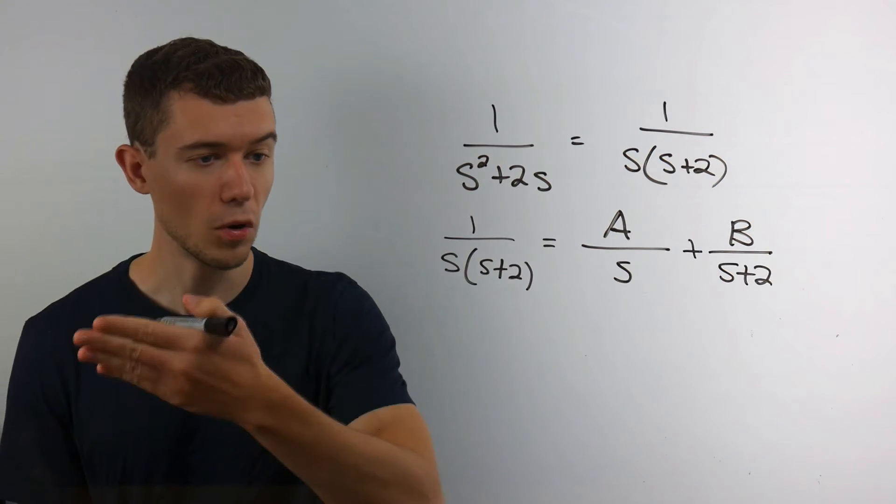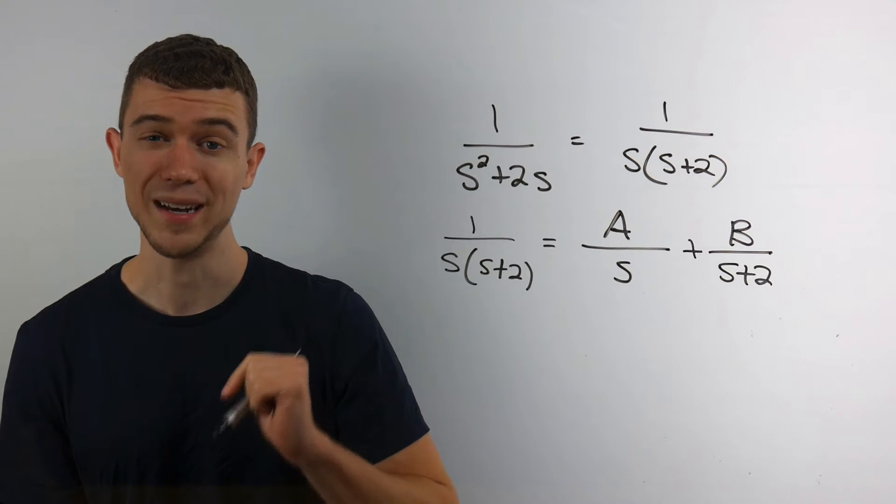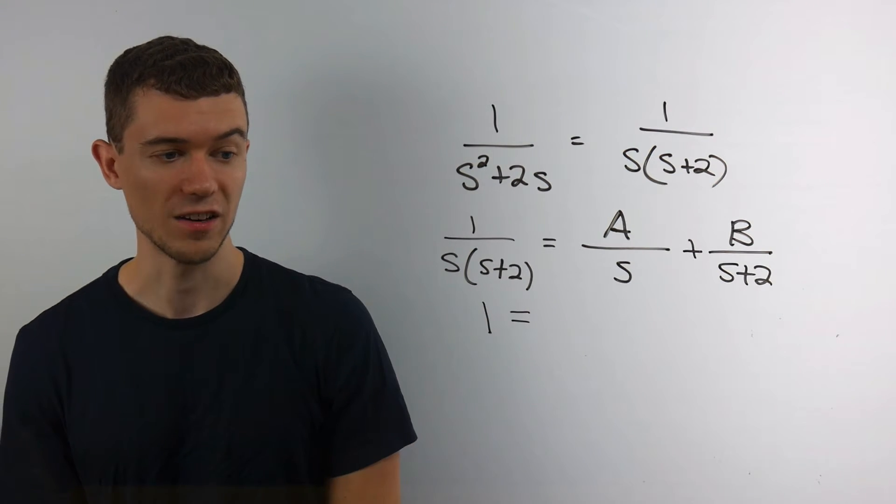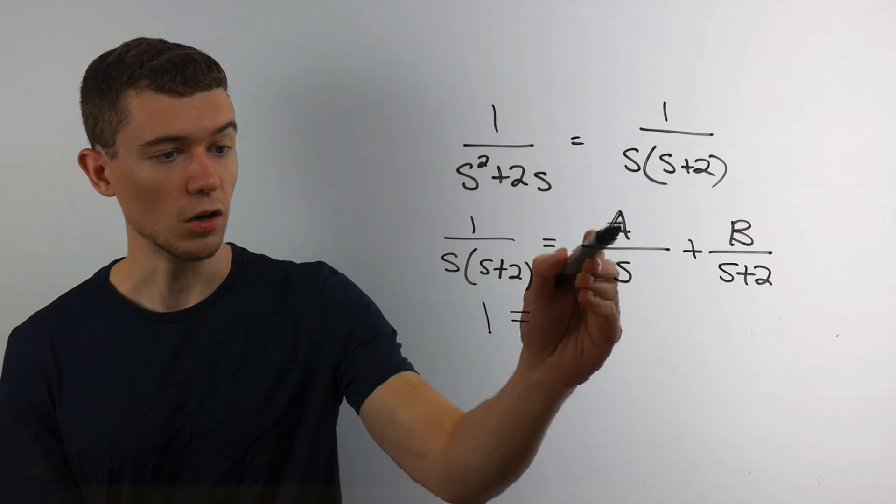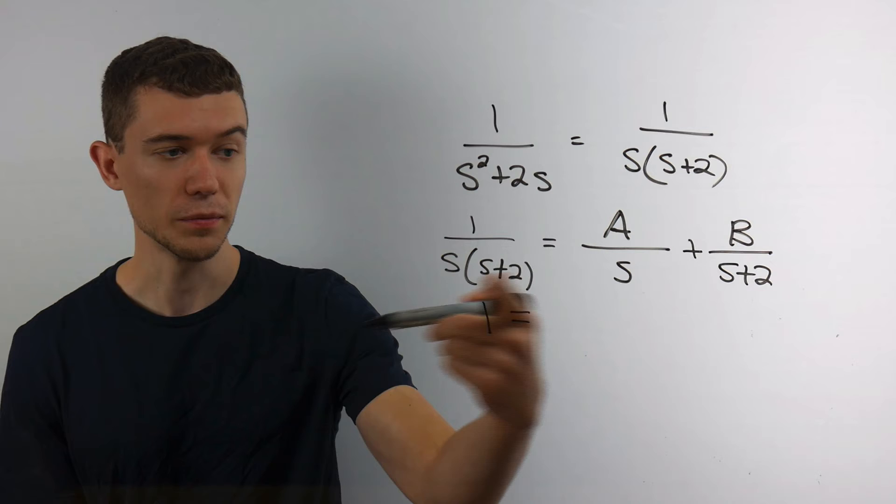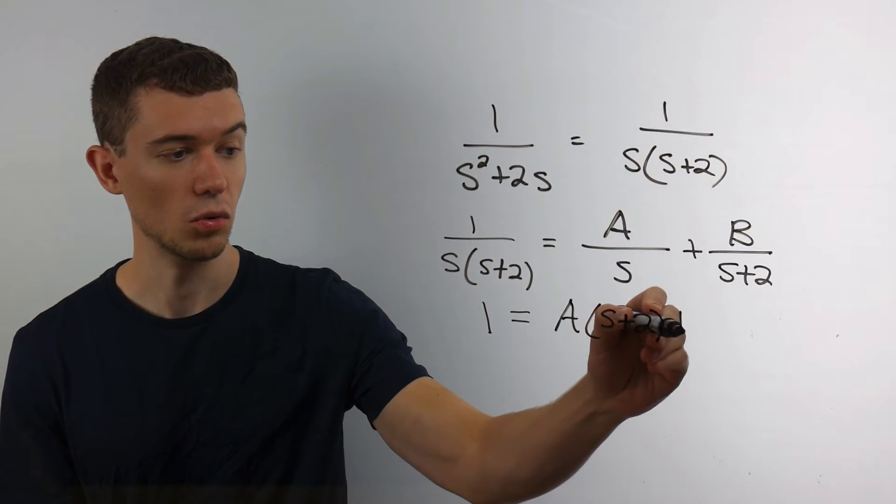And the way we find out is by multiplying everything by this denominator. So if I multiply every term by this entire denominator, it will clear all the fractions. So on the left, I'll just have 1. This term, the s over the s would cancel if I'm multiplying it by s times s plus 2. And I'd have a times s plus 2.